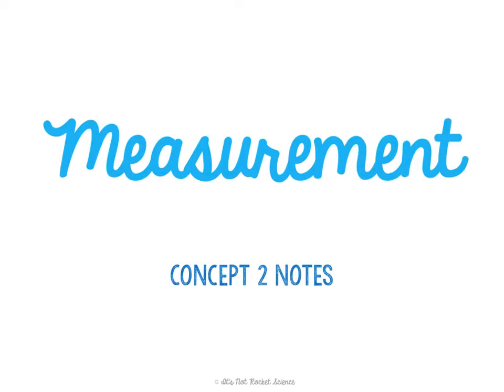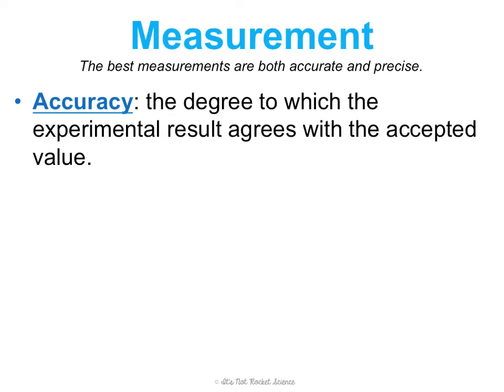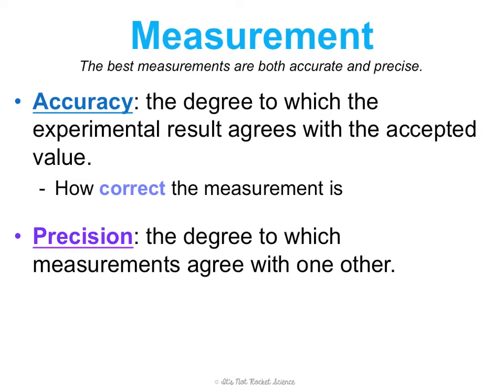We're going to be talking about measurement. This is Concept2Notes. One thing that's important when you make measurements is that they are both accurate and precise. Accuracy is the degree to which the experimental result agrees with the accepted value. In simpler words, we just want to know how correct the measurement is. A good measurement will be accurate — it will be correct.